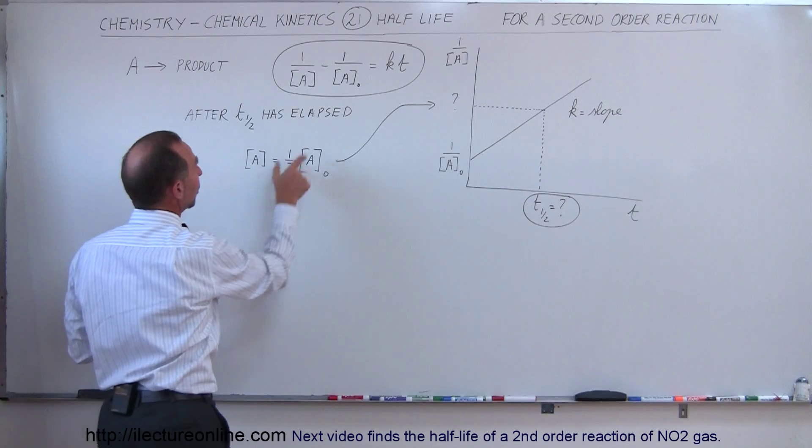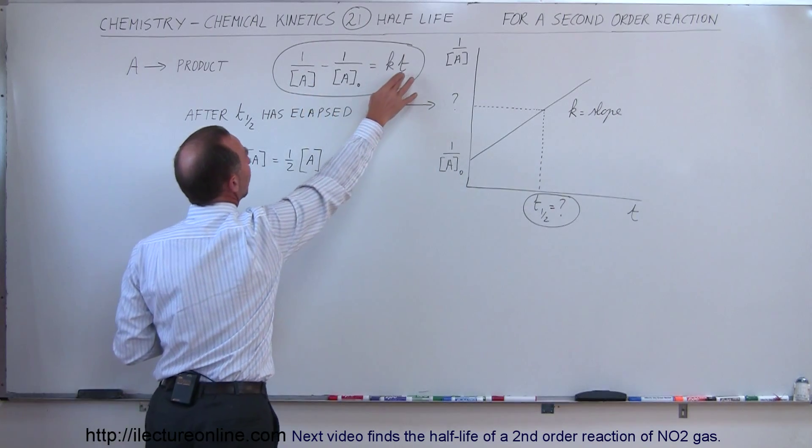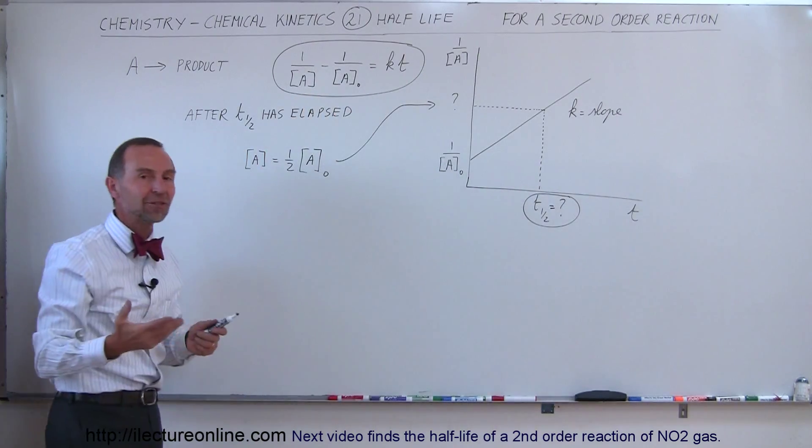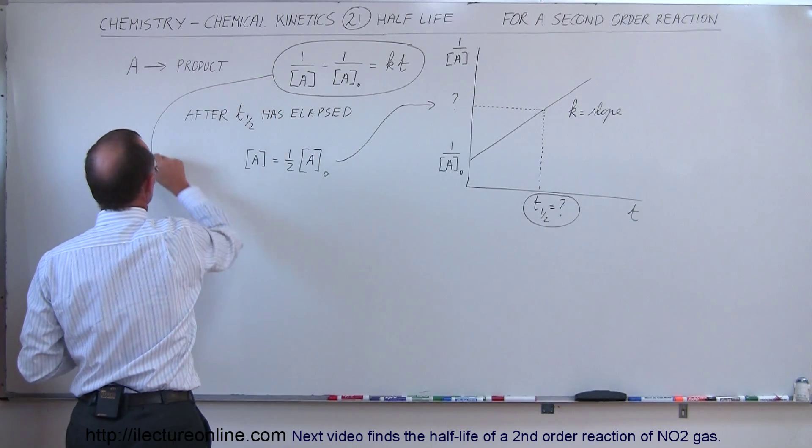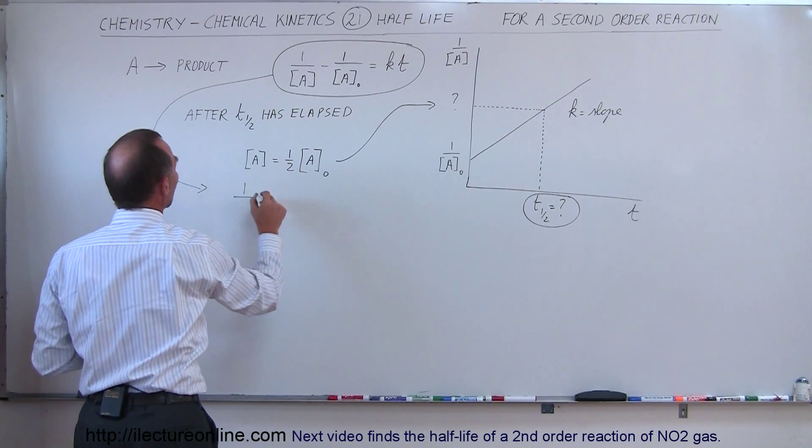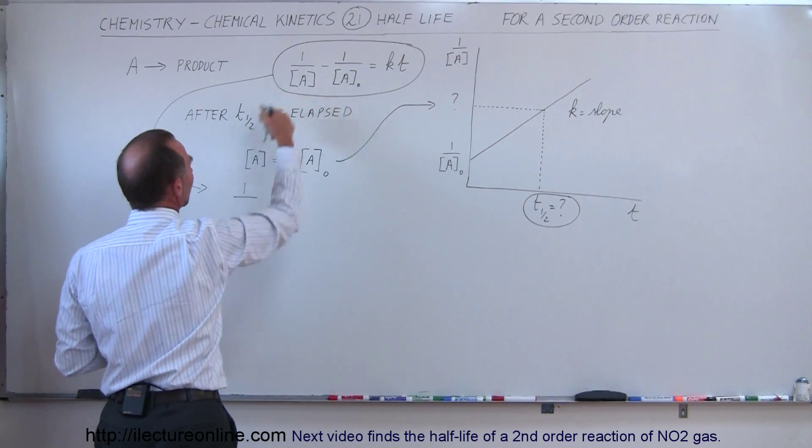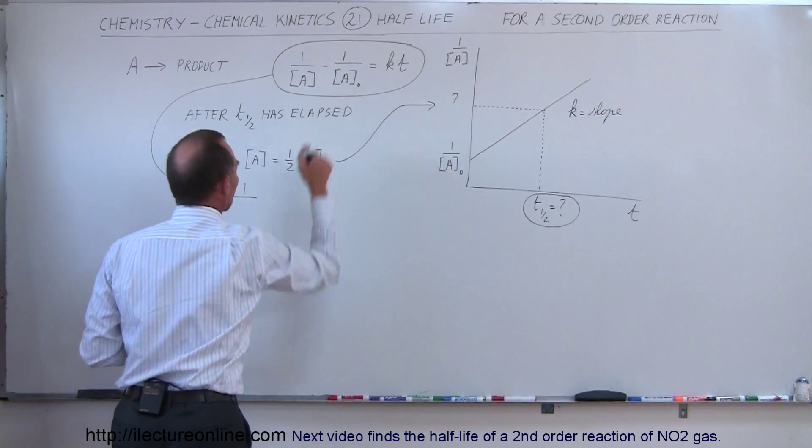So we're going to take this and plug that into our equation here and change time to the half-time, the half-life time. So when we do that, we get the following equation. We get 1 over, instead of writing the concentration of A, we're going to write half the original concentration of A.